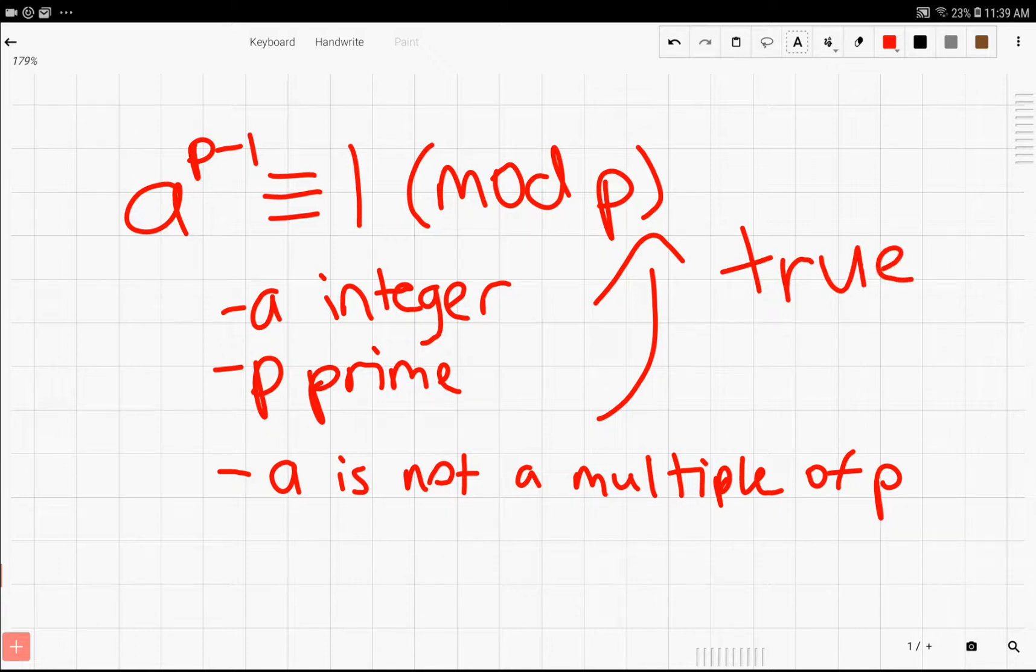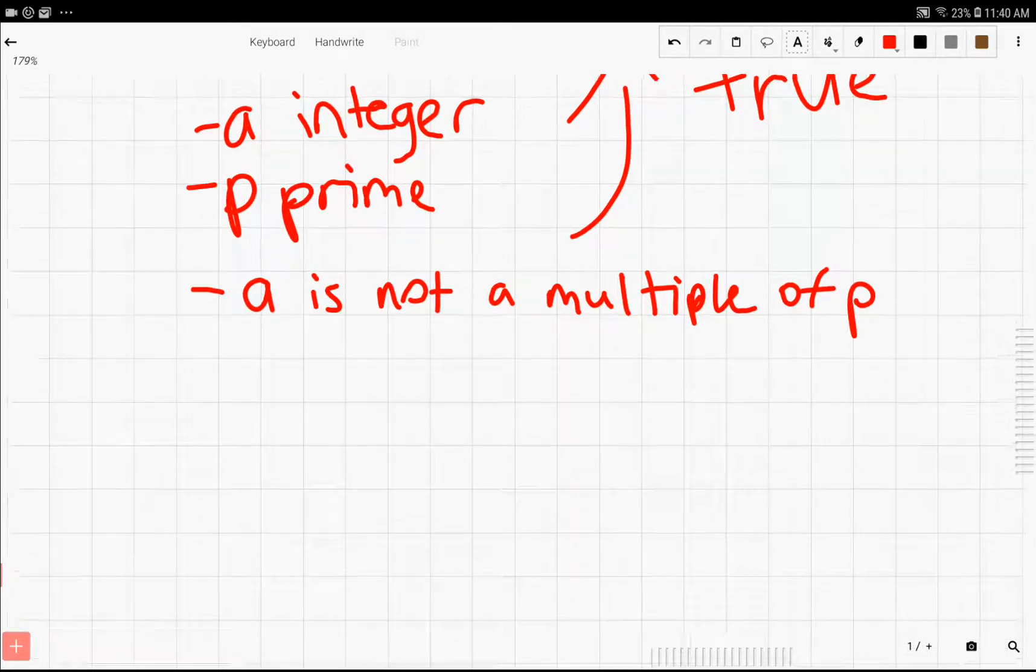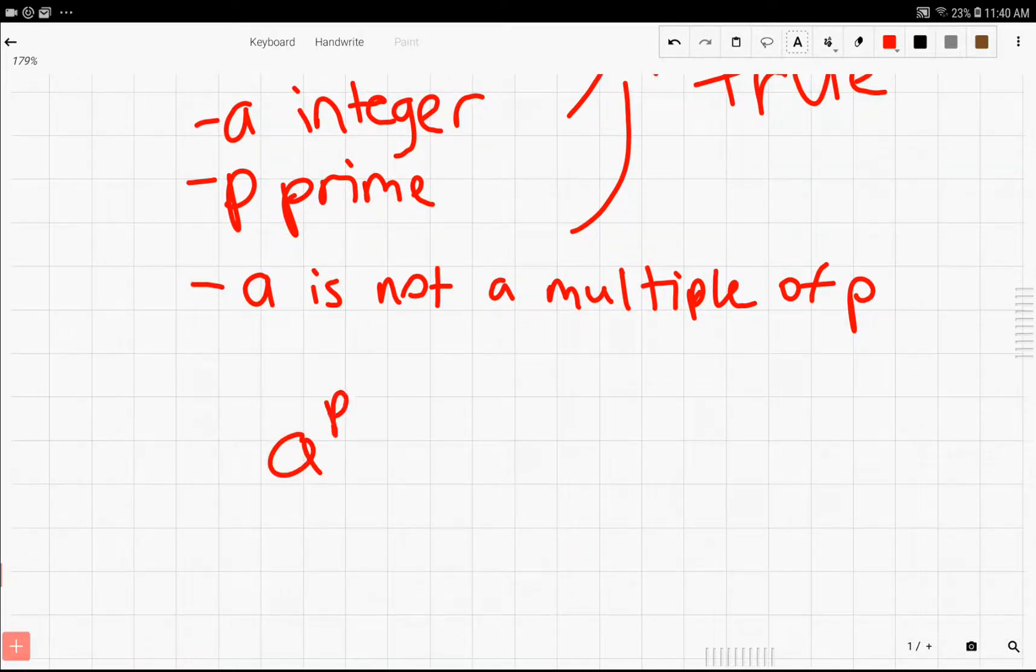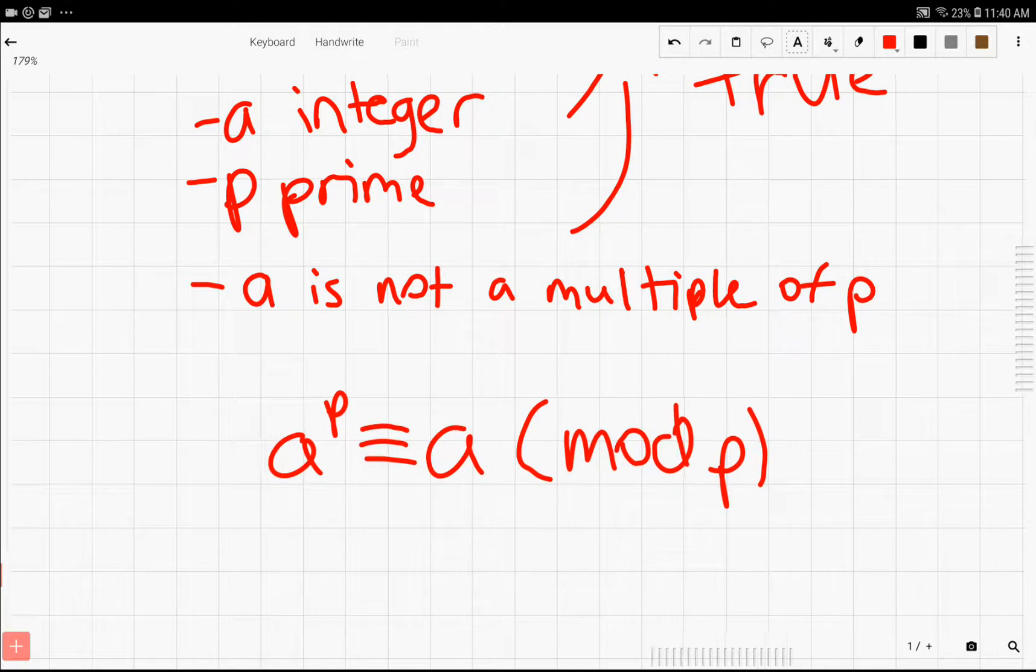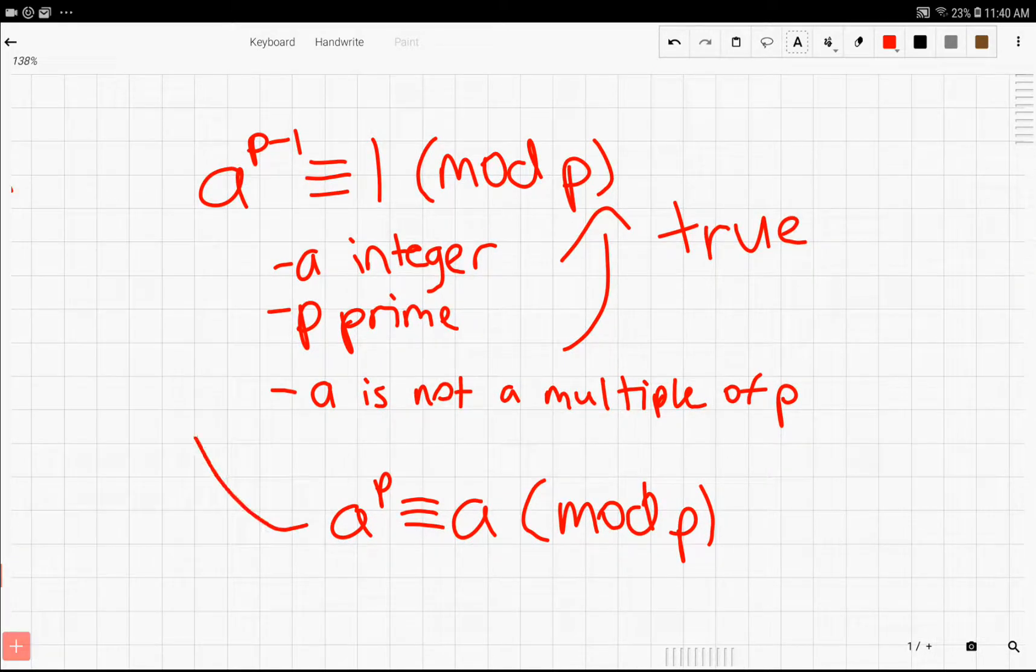We're going to do a quick proof of this theorem by proving that a^p is equivalent to a mod p. What you'll notice is that these two are actually equivalent, it's just that Fermat's Little Theorem is written in this way.